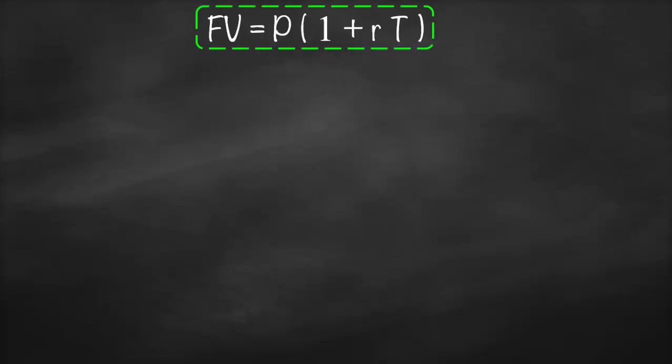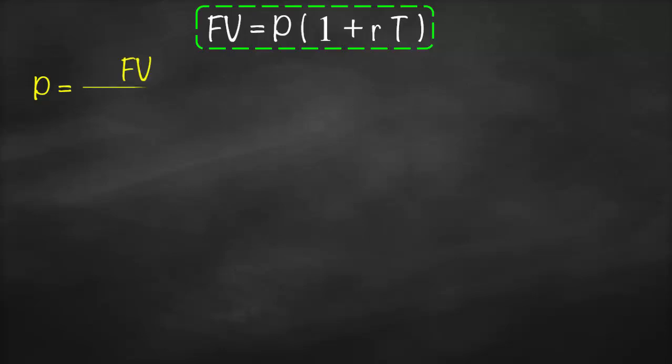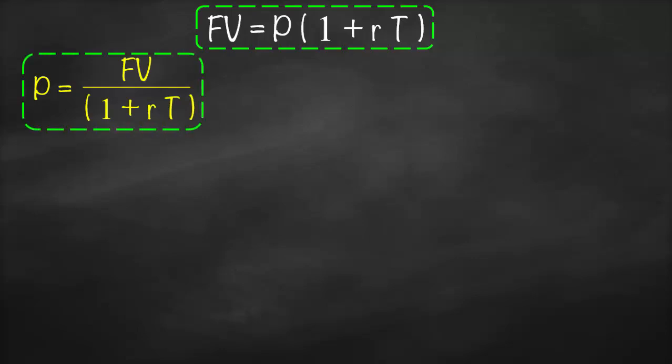So this will be our first formula. Then our second formula — what if we would like to calculate the principal? This means we need to divide both sides by the bracket, which is one plus simple interest times time. So we'll say that our principal is equivalent to future value divided by one plus simple interest times time. And this will be our second formula.